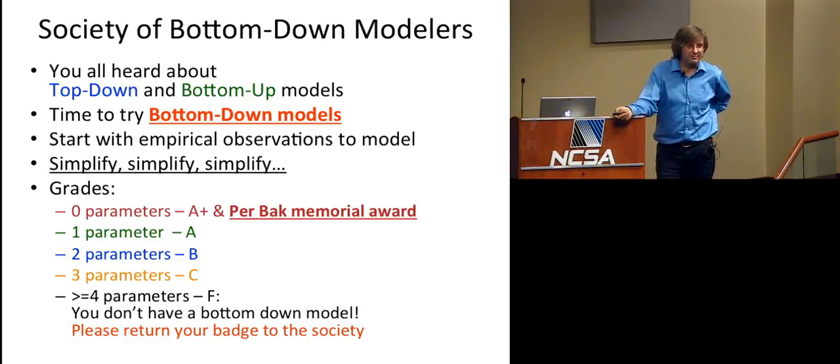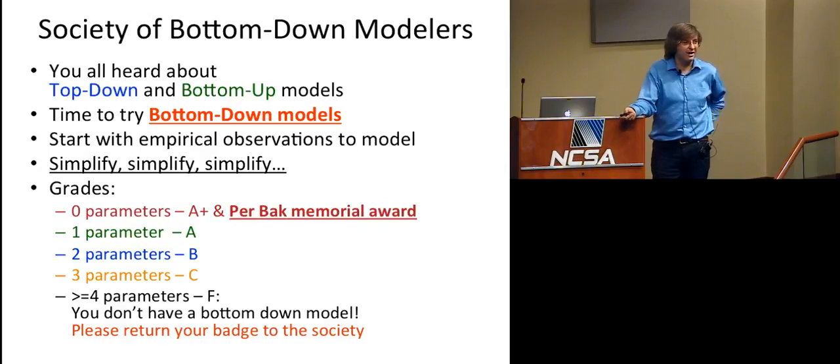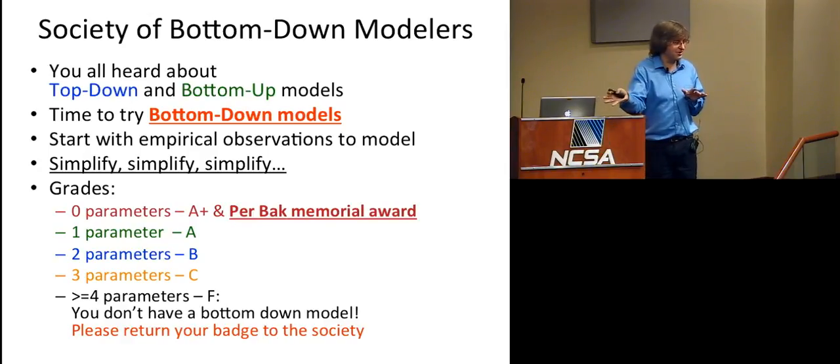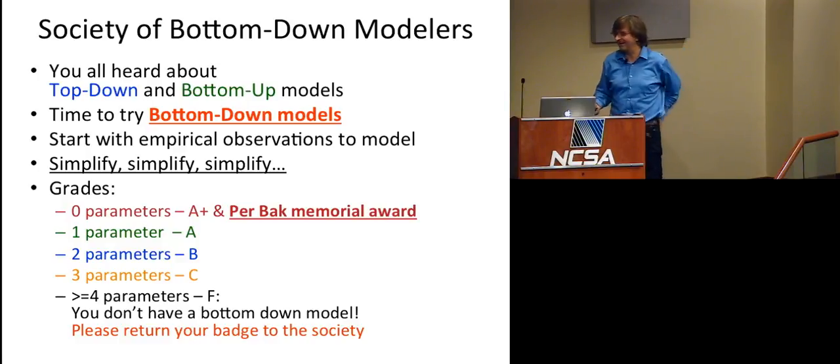And, you know, in order to be admitted to our society, we give grades for your models. Of course, the best model has zero parameters. For this, you get A-plus and a Percus Memorial Award. Percus is my mentor. Unfortunately, he died about 10 years ago. He was my mentor at Brookhaven Lab. One parameter gives you an A, two parameters B, three parameters C, and then four parameters don't bother showing up. So standard model is not in this competition. They failed. They have, whatever, 20, 120 parameters. I don't remember exactly.